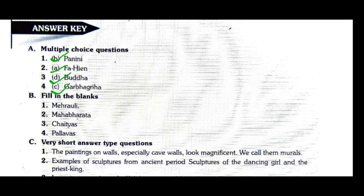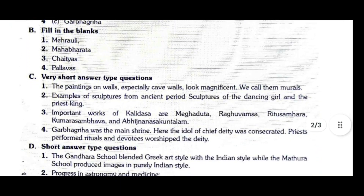Fill in the blanks: Question one — the iron pillar at Mehrauli is the specimen of excellence in metallurgy achieved during the Gupta period. Question two — the Bhagavad Gita is a part of the epic Mahabharata. Question three — at Karli there is a famous rock-cut Chaitya built under the Satavahanas. Question four — the Shore Temple at Mahabalipuram was built by the Pallavas.